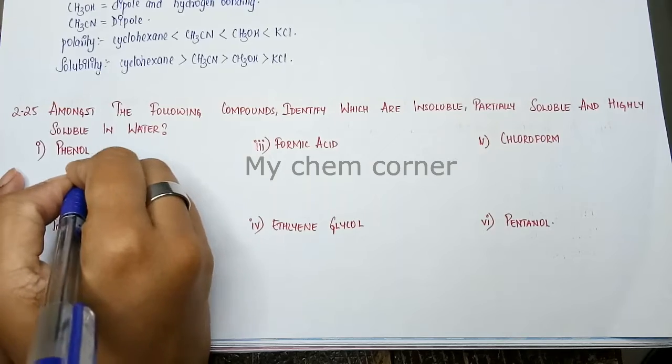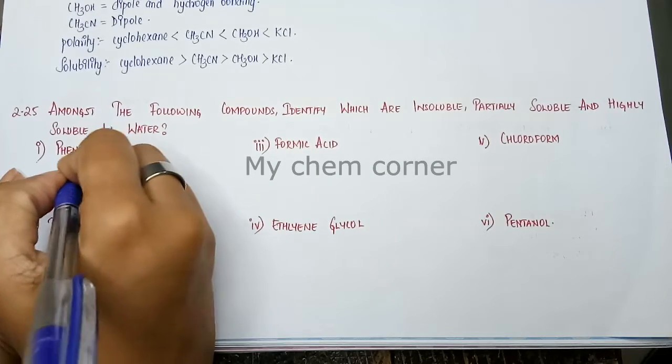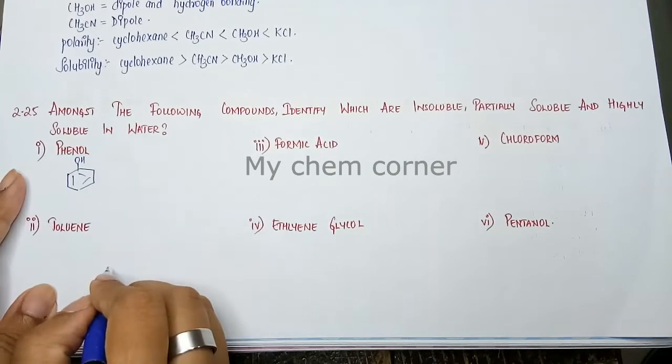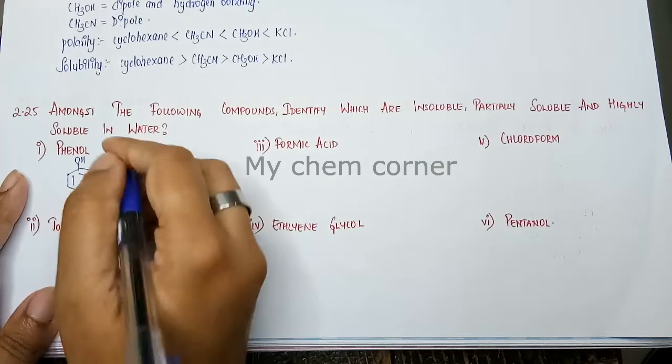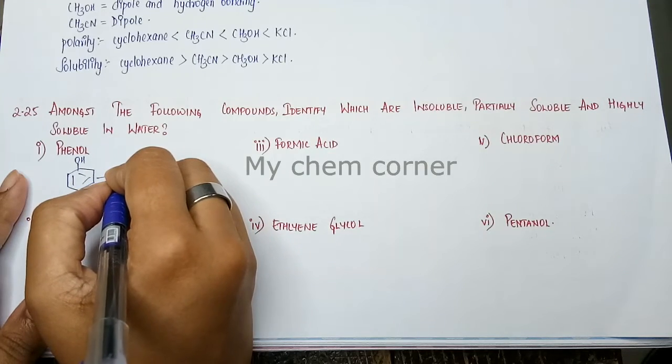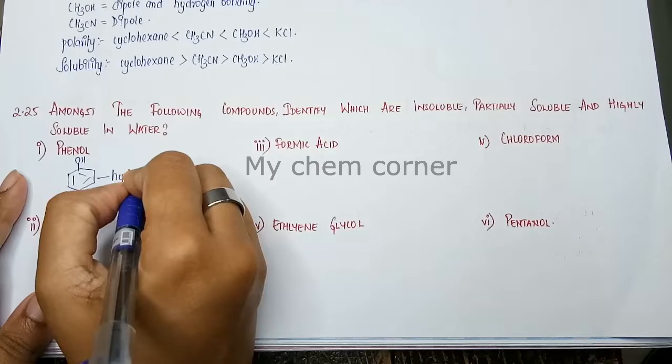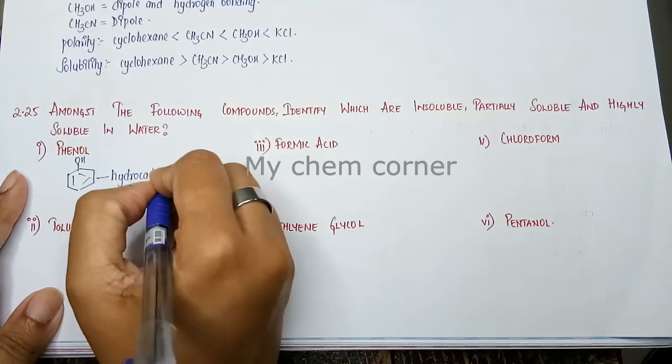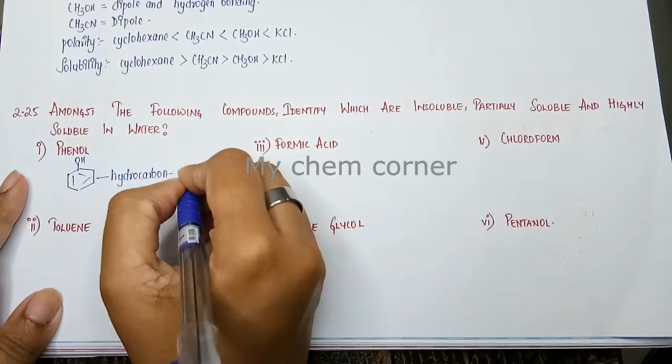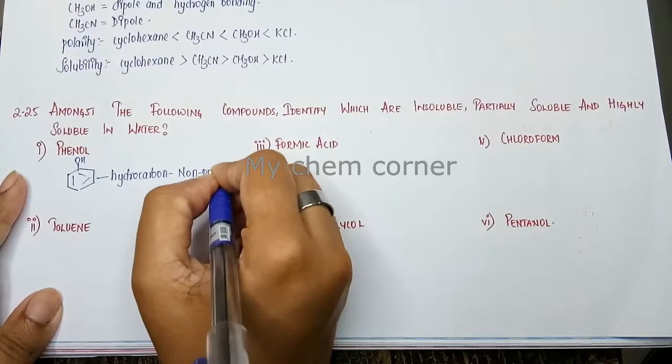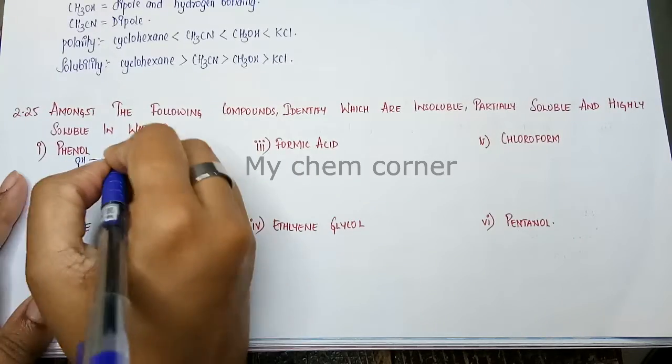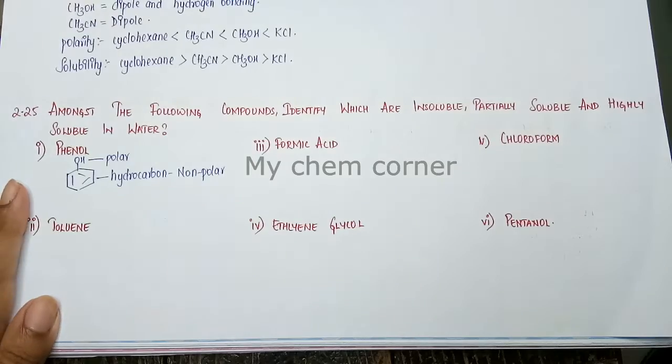So first one is phenol. The structure of phenol is a benzene ring with an OH. Remember the benzene ring over here is a hydrocarbon and when they are hydrocarbons they are non-polar, and this part of the compound is a polar functional group.